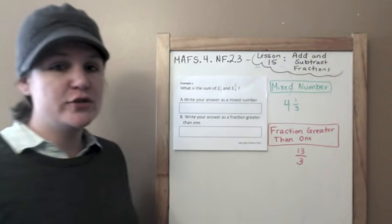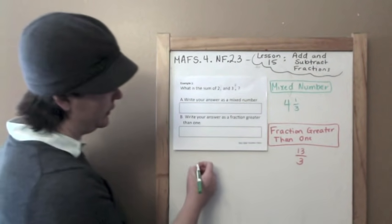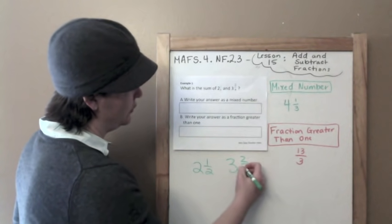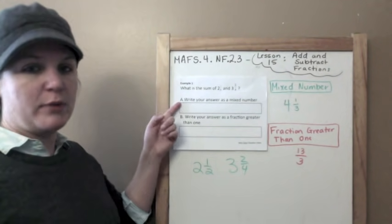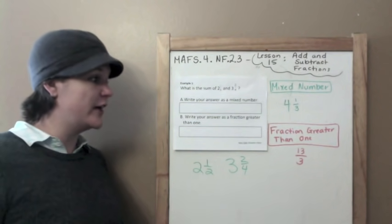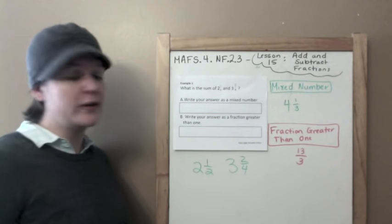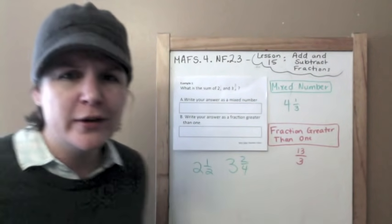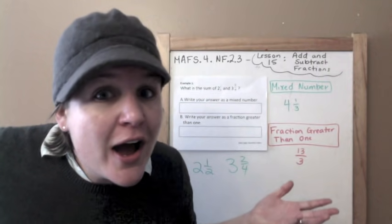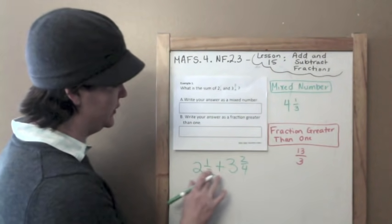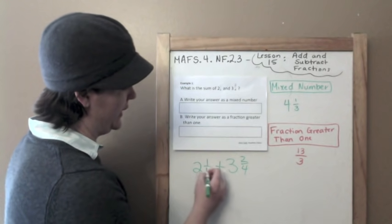Let's move on. Alright, what is the sum of 2 1/4 and 3 2/4? Part A says, write your answer as a mixed number, and part B says, write your answer as a fraction greater than 1. So when it says, what is the sum, which operation are we doing? You're right, addition, that means we're adding them.